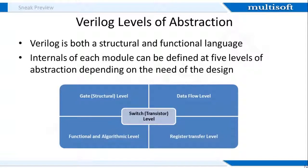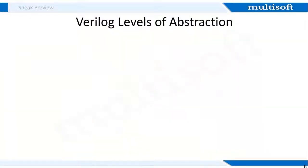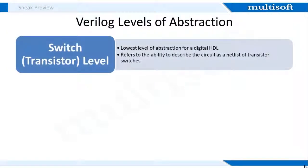Verilog is both a structural and functional language. Internals of each module can be defined at five levels of abstraction, depending on the need of the design. The module behaves identically with the external environment irrespective of the level of abstraction at which the module is described. Internals of the module are hidden from the environment, so the level of abstraction can be changed without any change in the environment. The first level is the switch level — it is the lowest level of abstraction for a digital HDL, referring to the ability to describe the circuit as a network of transistor switches. It is a more detailed modeling scheme that can catch some additional electrical problems.